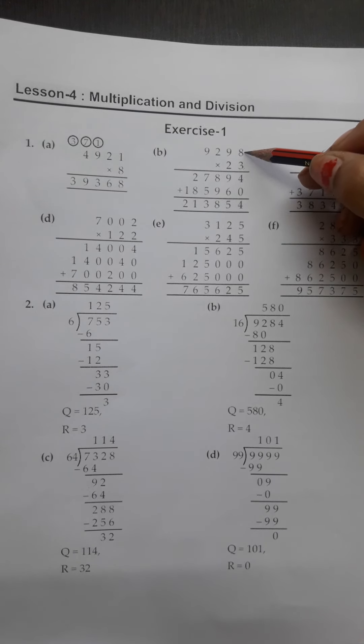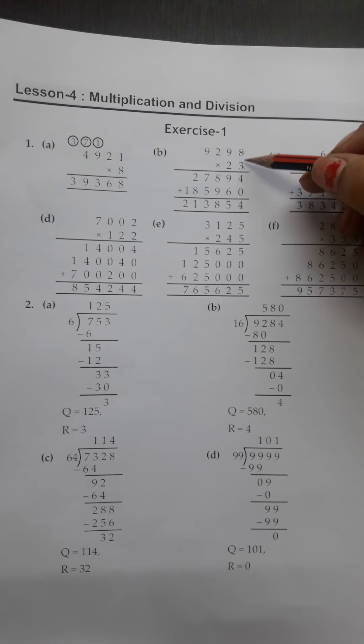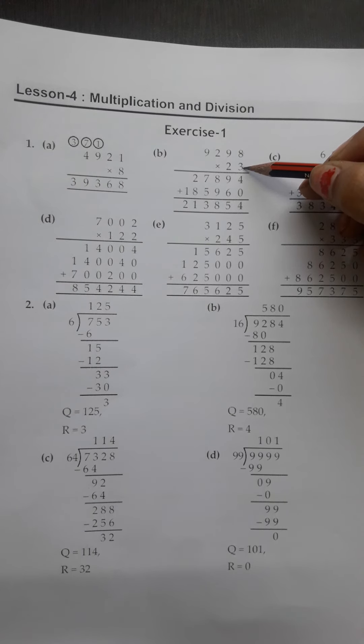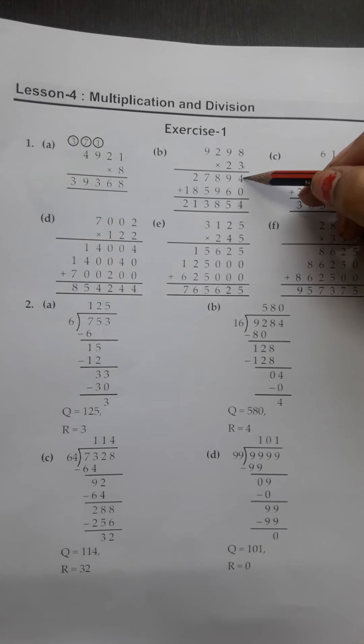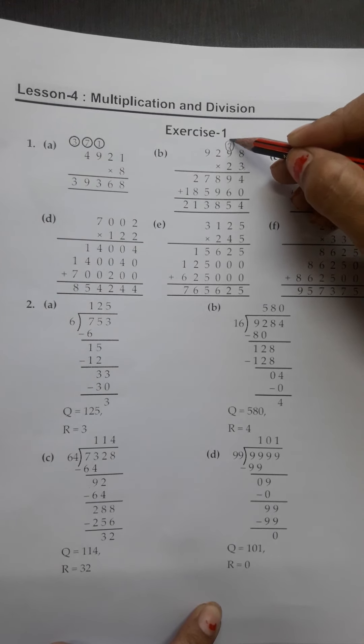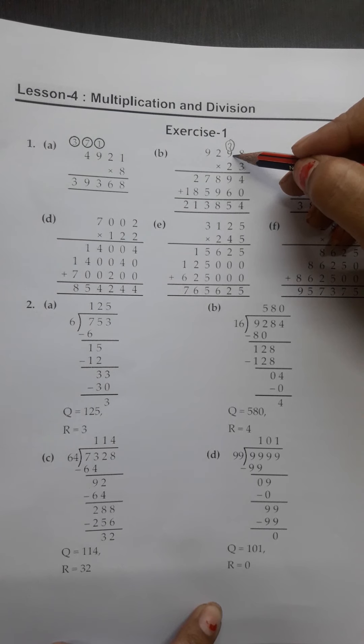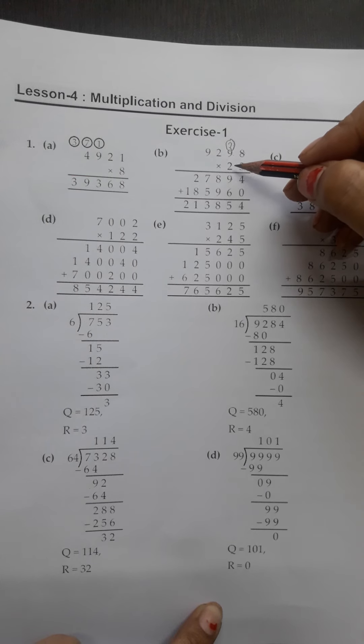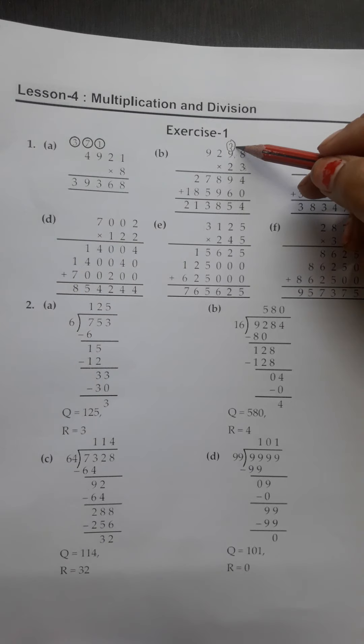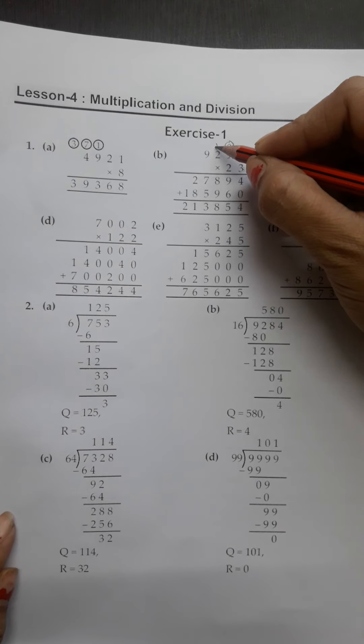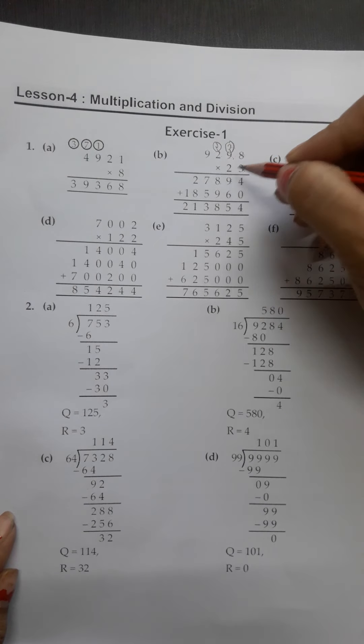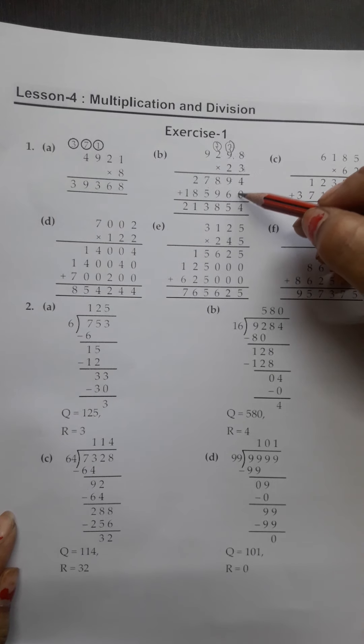3 eights are 24. 4 we write, 2 we carry. 3 nines are 27. 7 we write, 2 we carry. 3 twos are 6 plus 2 equals 8. 3 nines are 27. 7 we write, 2 we carry. Our answer is 27,894.